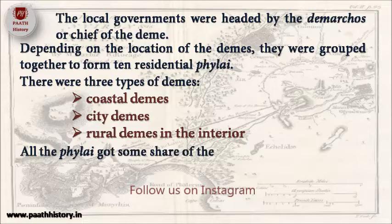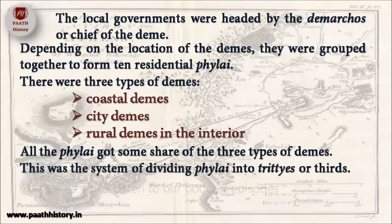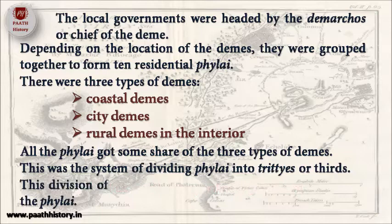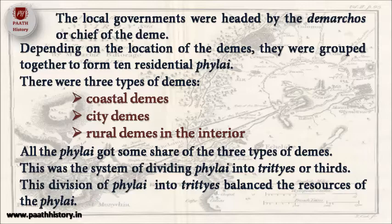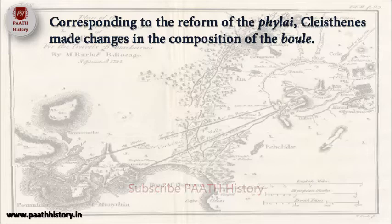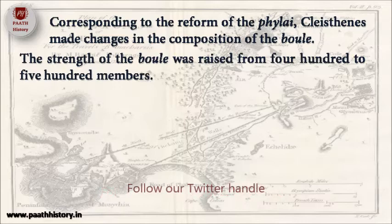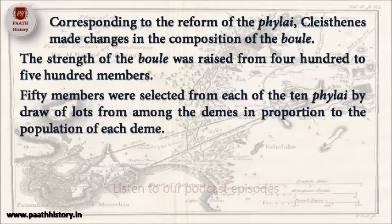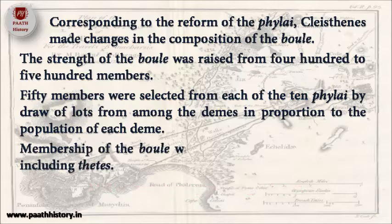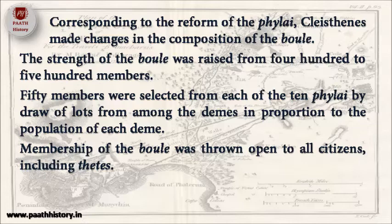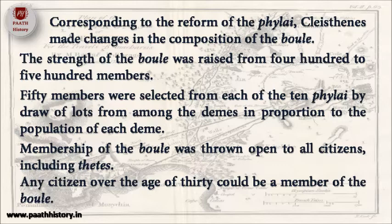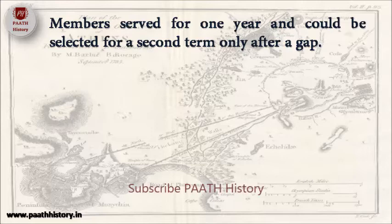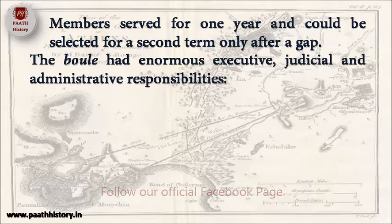All the Philae got some share of the three types of Demes. This was the system of dividing Philae into Tritaes or thirds, which balanced the resources of the Philae. Corresponding to the reform of the Philae, Cleisthenes made changes in the composition of the Bole. The strength of the Bole was raised from 400 to 500 members. Fifty members were selected from each of the 10 Philae by draw of lots from among the Demes in proportion to the population of each Deme. Membership of the Bole was thrown open to all citizens including the Thetis. Any citizen over the age of 30 could be a member of the Bole. Members served for one year and could be selected for a second term only after a gap. The Bole had enormous executive, judicial and administrative responsibilities.